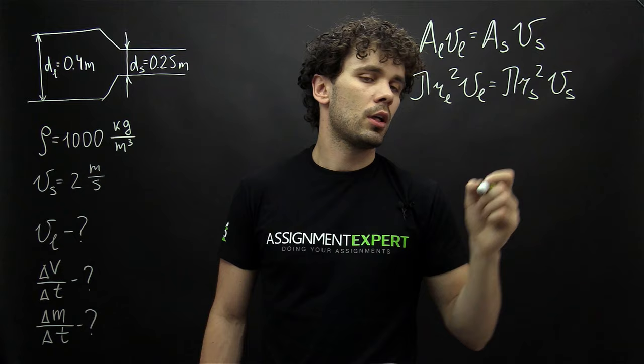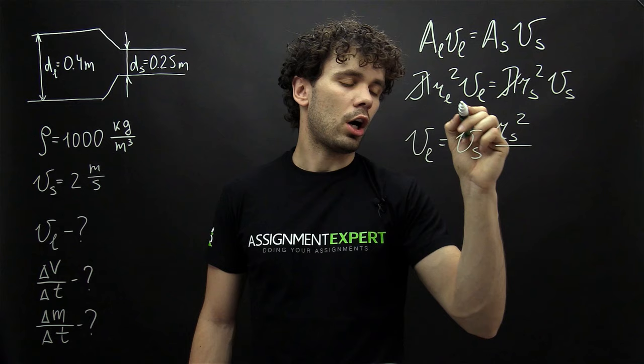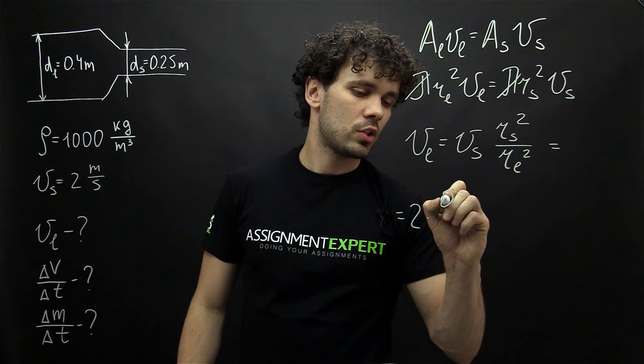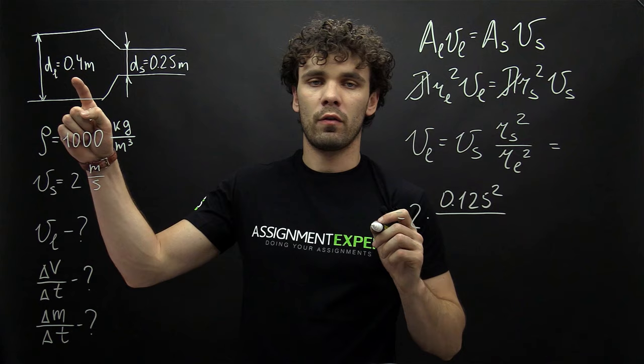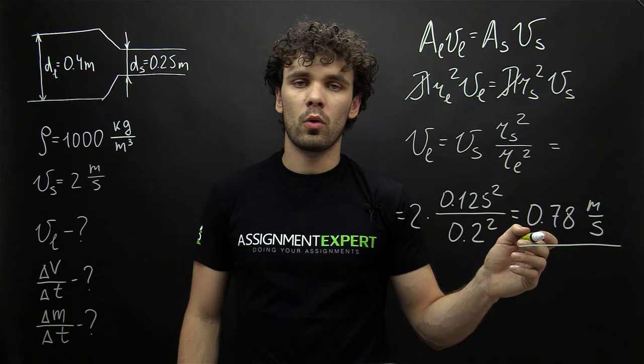We can cancel out pi, and from here we derive V_L as V_S times R_S squared over R_L squared. This gives us 2 times the radius of the smaller part of the pipe, which is half of the diameter, so we get 0.125 squared over 0.2 squared, and this gives us 0.78 meters per second. So that is the flow speed in the larger part of our pipe.